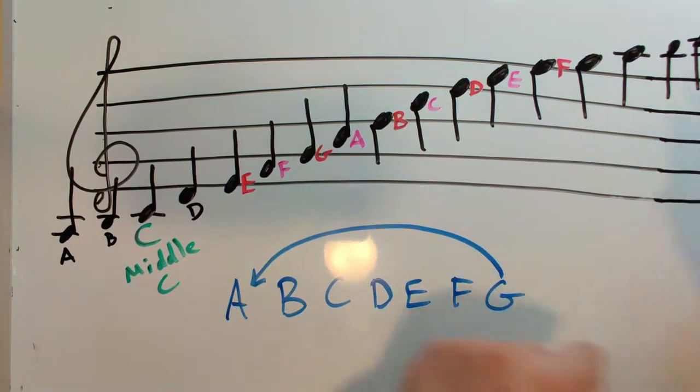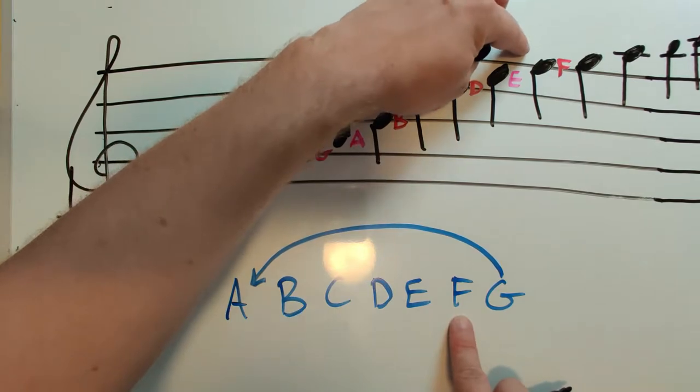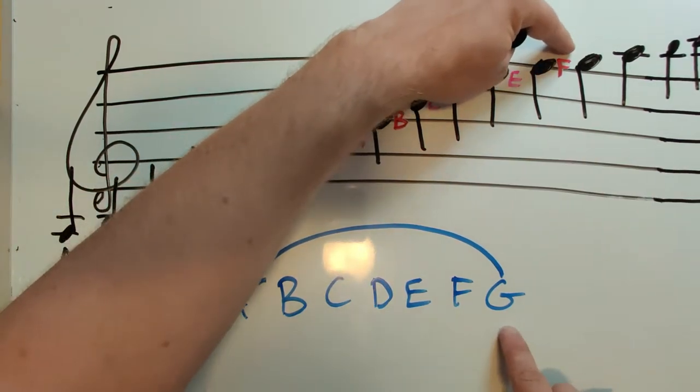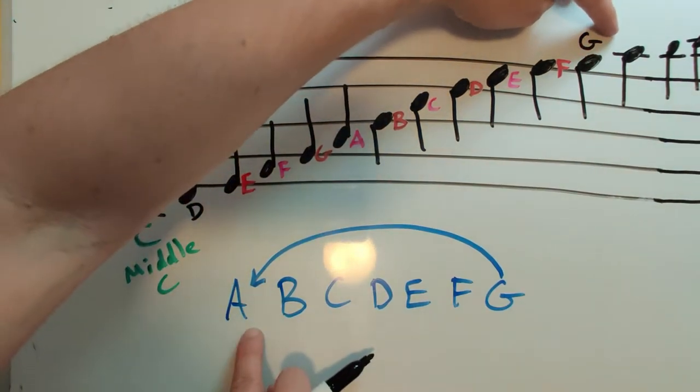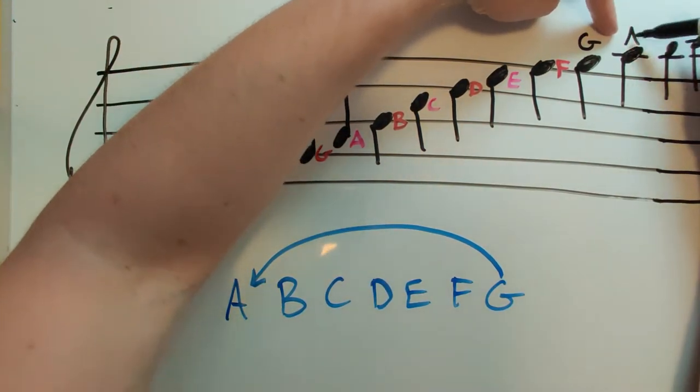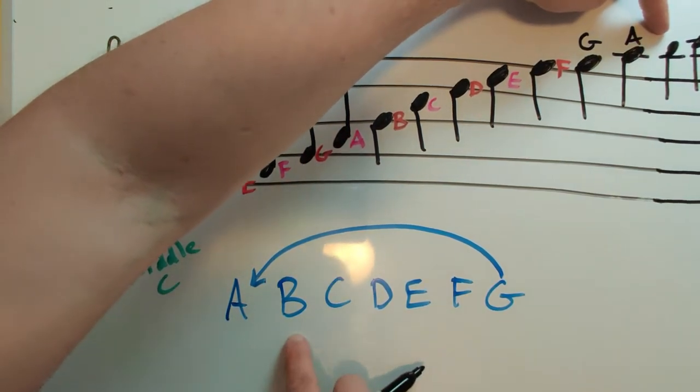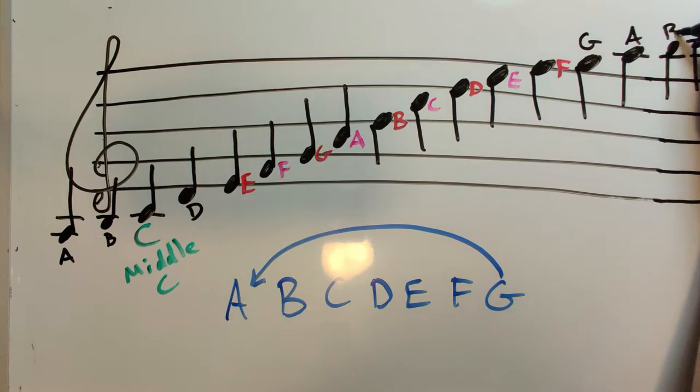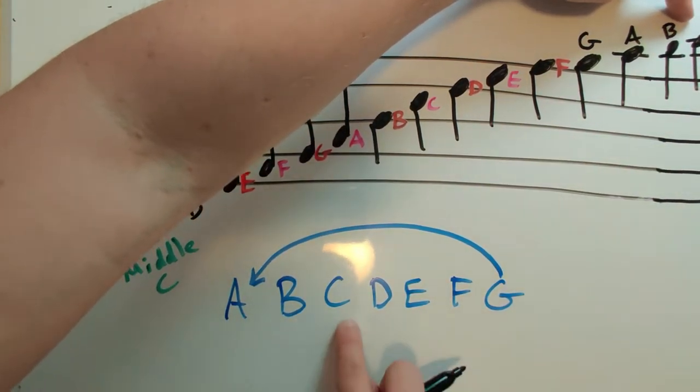All right, let's go all the way up here. Top line, we know it's an F. When we go up, we're going to go forward in the alphabet. So after F, above the staff is going to be a G. Go all the way back to A. So the first ledger line is going to be an A. What's the note above the first ledger line going to be? It's going to be a B. And then finally, two ledger lines above is going to be C.